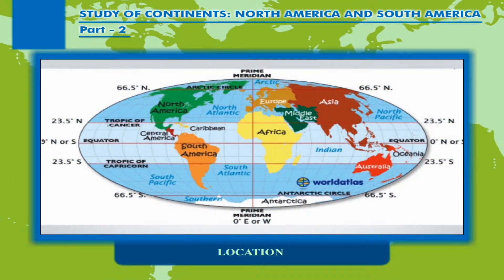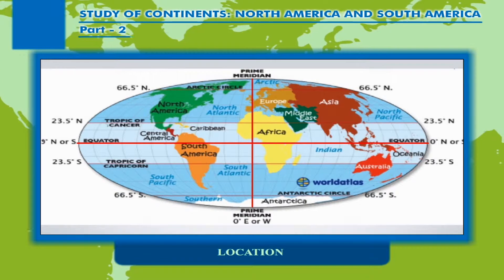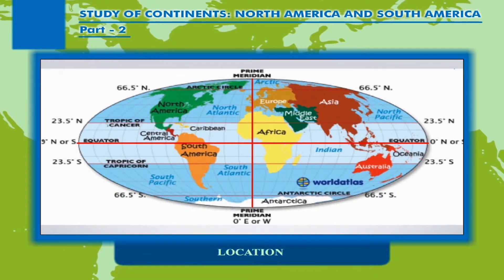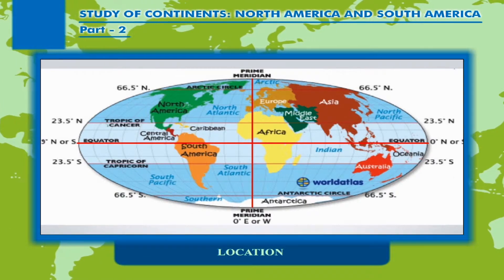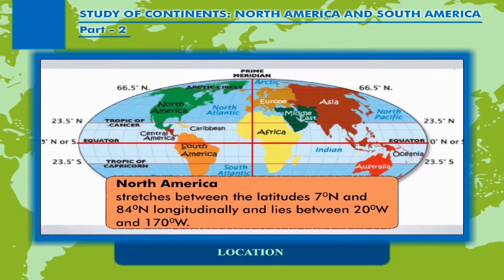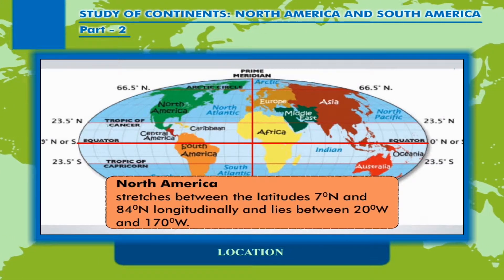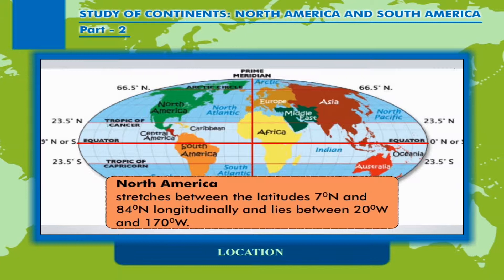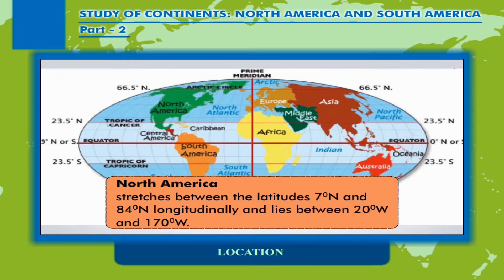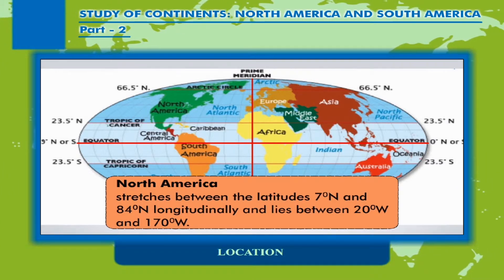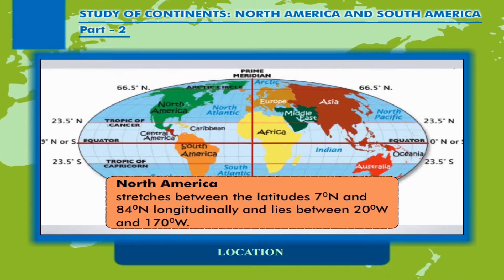Lying to the north of the equator and towards the west of the Prime Meridian, the third largest continent, North America stretches between the latitudes 7 degrees north and 84 degrees north latitudinally, and lies between 20 degrees west and 170 degrees west.